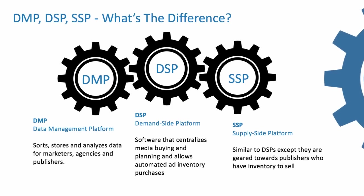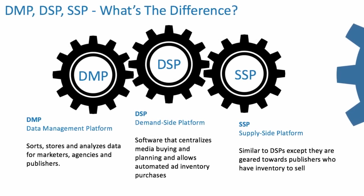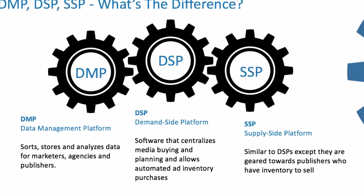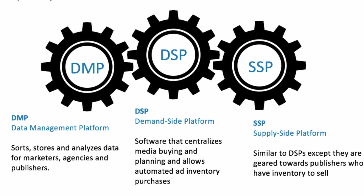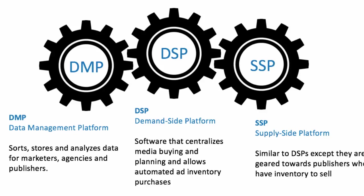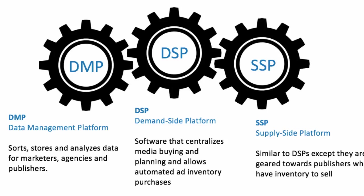We've heard a lot of acronyms out there — a DSP, a DMP, an SSP. What's the difference? Well, a DMP is a data management platform. It sorts, stores, and analyzes data for marketers, agencies, and publishers.